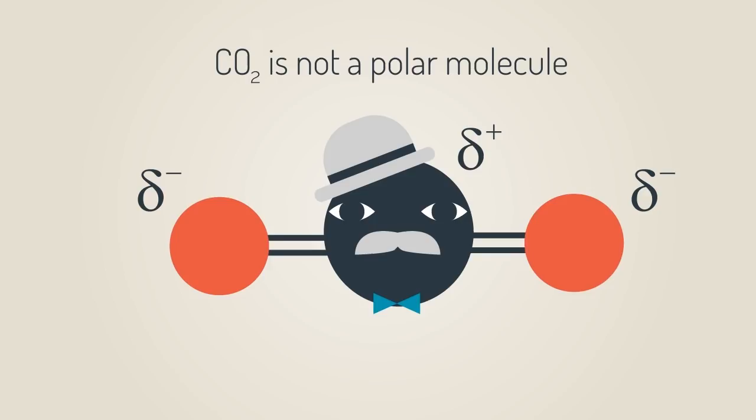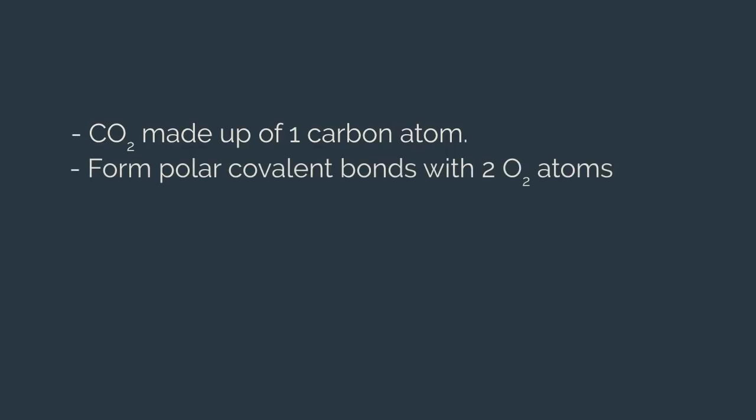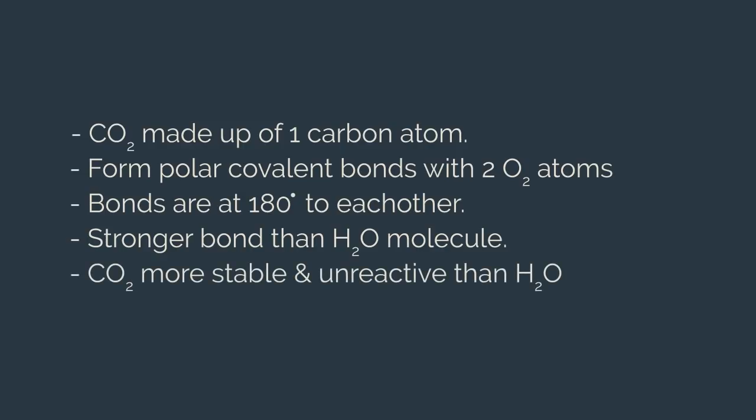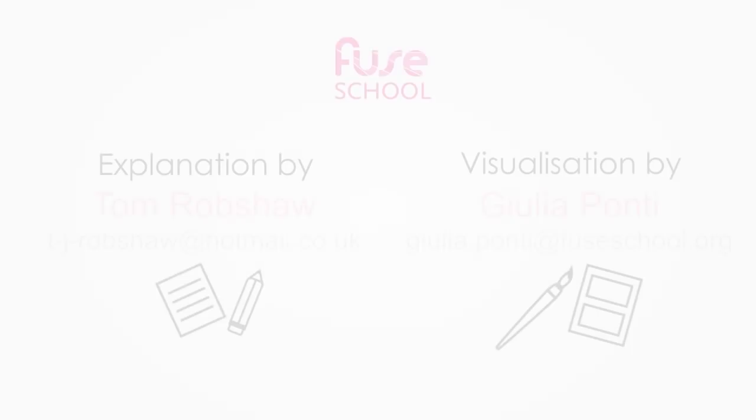Let's sum up: carbon dioxide is made from one carbon atom forming polar covalent bonds with two oxygens. These bonds are at 180 degrees to each other and are stronger than the bonds of a water molecule, making carbon dioxide more stable and unreactive than water.